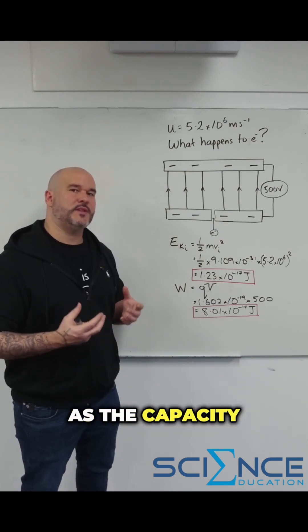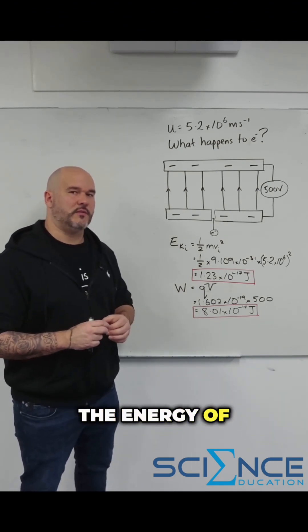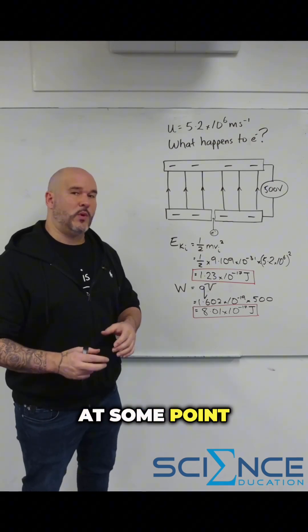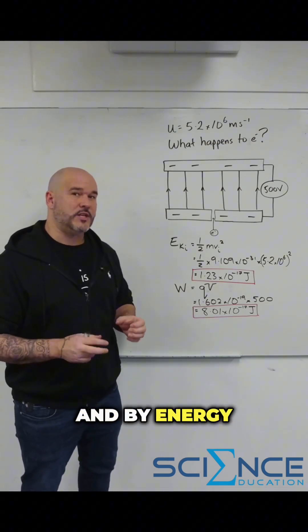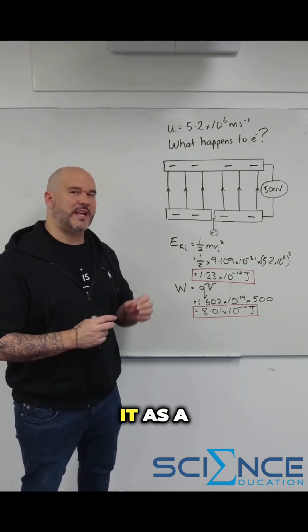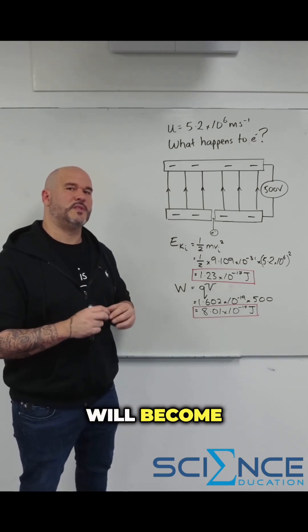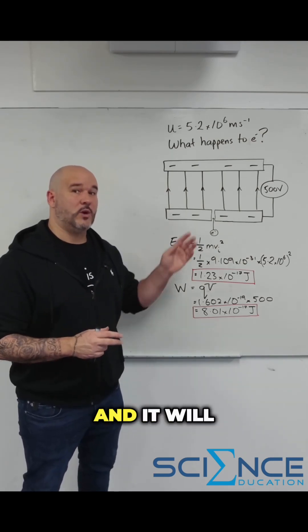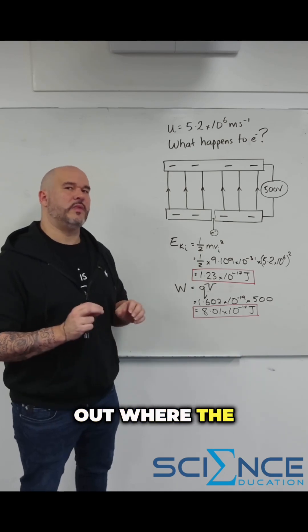So seeing as the capacity of work to be done by the electric field is greater than the energy of the entering electron, at some point in the field, the energy of the electron will become zero. And by energy, we're only considering the kinetic energy of the electron as we consider it as a single object system. So at some point, the electron will become stationary. It'll turn around and it will go back through the gap that it entered through.